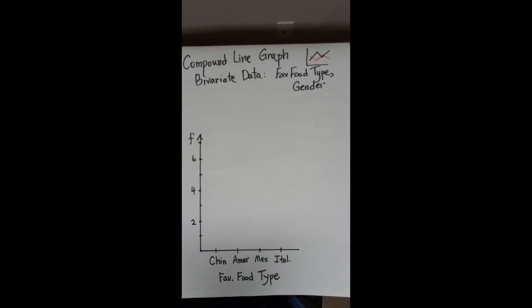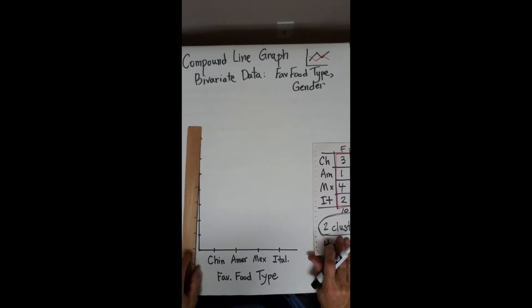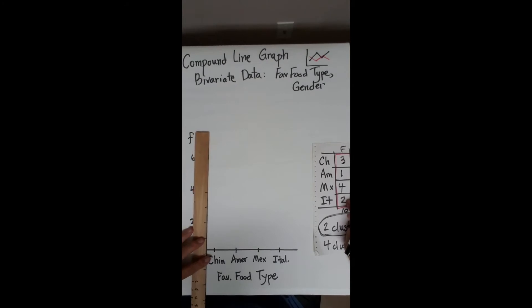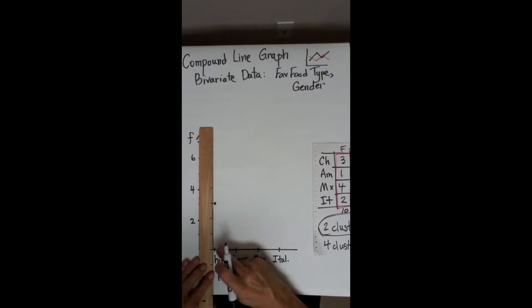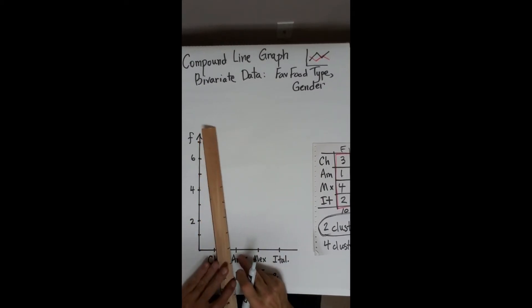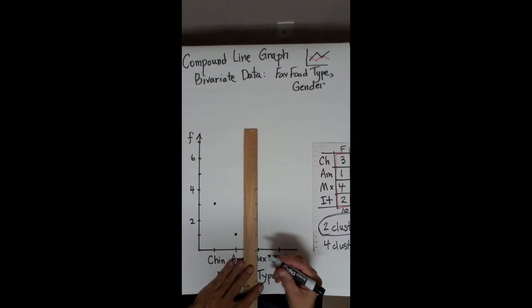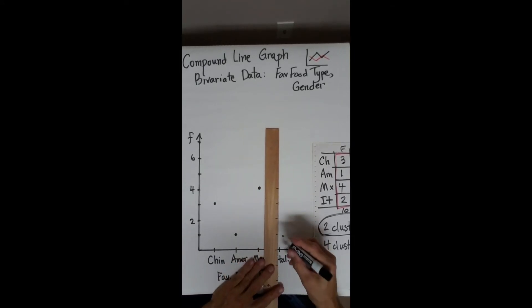Now, I need to do each gender separately. There were three females. Let's do the female line first. There were three females who enjoyed Chinese, so I go one, two, three. Put a dot here above Chinese. There was one female who cared for American. Four females who cared for Mexican, one, two, three, four. And two females cared for Italian.